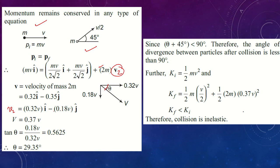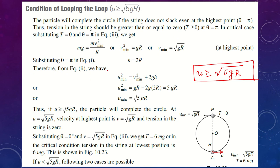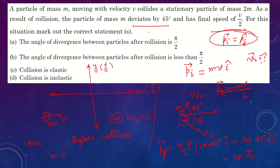From the components of v2, we find tan(theta) = 0.56, which is less than 1. Since tan(45°) = 1, theta is less than 45 degrees. So the first particle moves at 45° and the second at theta < 45°, meaning the total angle of divergence between the two particles is less than 90 degrees. Therefore option B is correct.